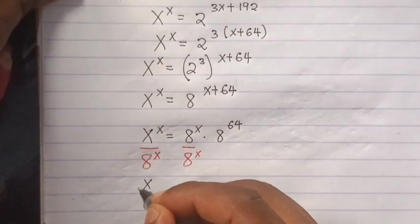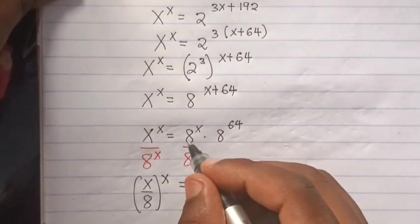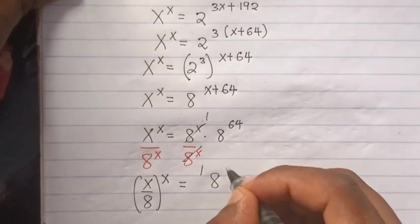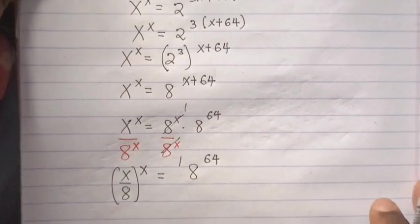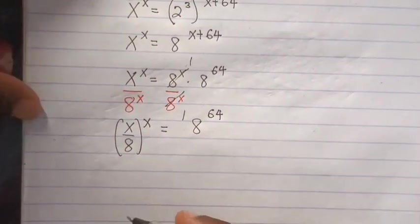x over 8 to the x is equals to, this one goes, this one 1, 1, so here it will be 8 to the 64. Then, the next step.